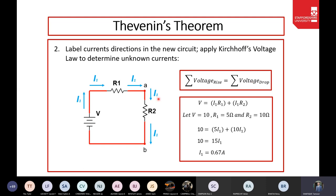Expanding the KVL expression: V equals I1·R1 + I1·R2. Assuming V = 10 V, R1 = 5 Ω, R2 = 10 Ω, substituting gives 10 = 5·I1 + 10·I1 = 15·I1. Solving, I1 = 0.67 A. So we've labeled the currents and found the value of the only current in this circuit.